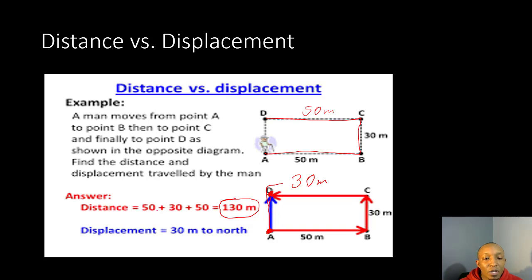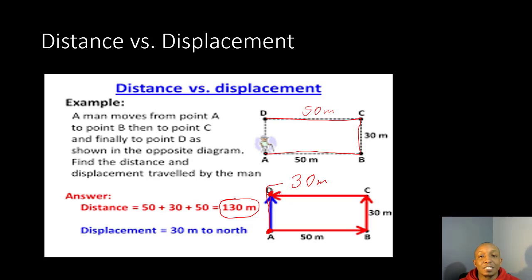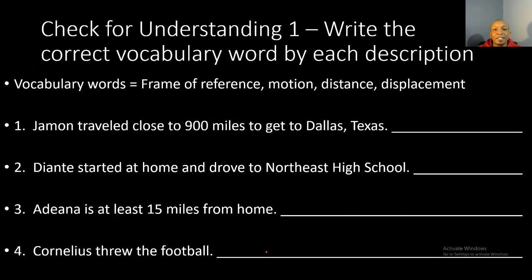The difference between distance and displacement: distance asks what is the total distance this person traveled — 130 meters in this case. Displacement asks how far is the person from the original starting point, so the man is actually only 30 meters away from his original starting point. That's the difference between distance and displacement.